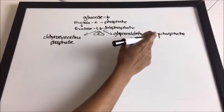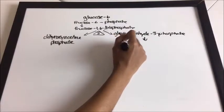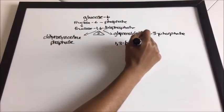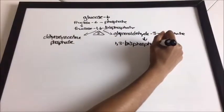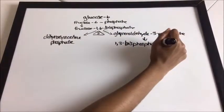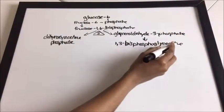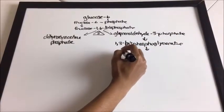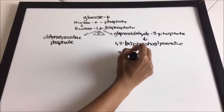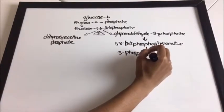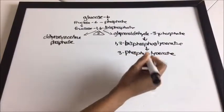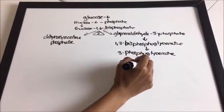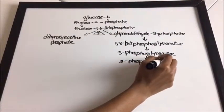Next we're going to bring down — remember the three — bring down the three. We have 1,3-bisphosphoglycerate. We're going to bring down the phosphoglycerate and we have 3-phosphoglycerate. Bring it down again and we have 2-phosphoglycerate.